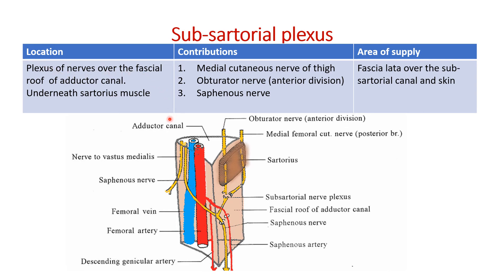The plexus of nerves over the fascia roof of the adductor canal are called the subsartorial plexus, and they are underneath the sartorius muscle. The contributions for the plexus are by the medial cutaneous nerve of thigh, the anterior division of obturator nerve, and the sartorius nerve. The area supplied: the deep fascia of thigh and the skin over the subsartorial canal are supplied by this subsartorial plexus of nerves.